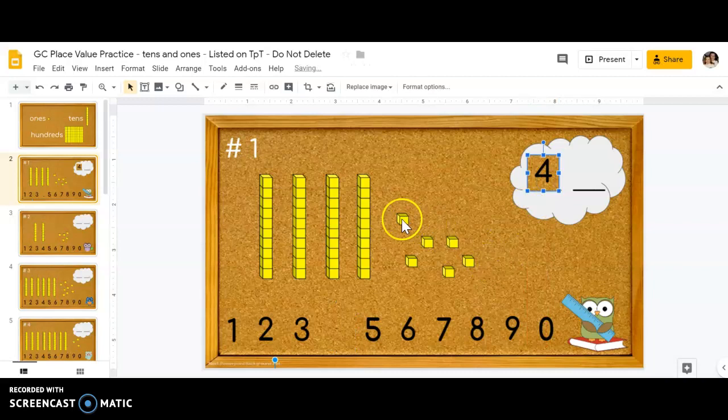And then I have how many singles? One, two, three, four, five, six. So I know the six goes in the ones place value. And I know my total number is forty-six.